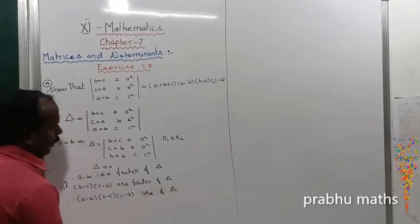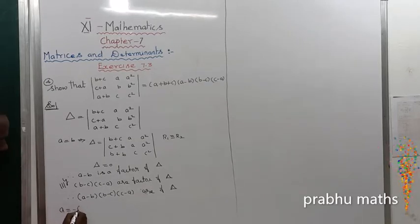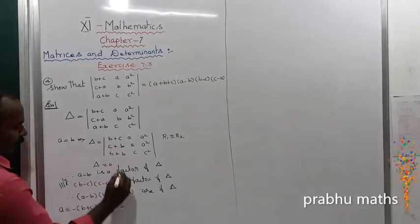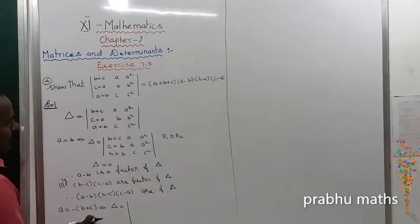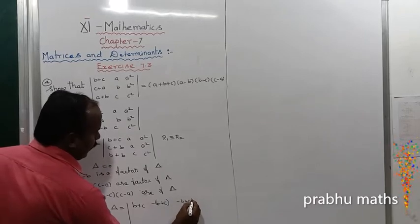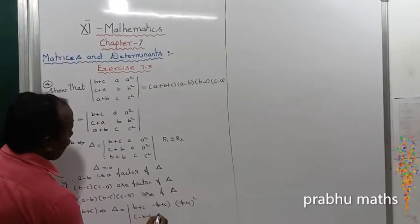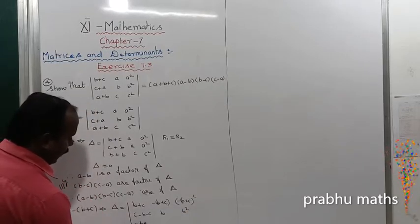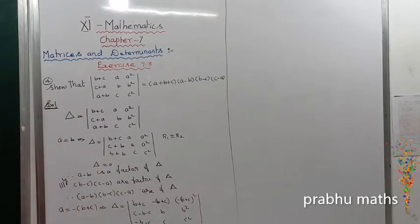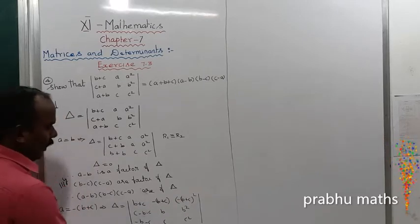The other factor: suppose a+b+c equals 0, so a equals -(b+c). Replacing a with -(b+c), the first row becomes: b+c, -(b+c), (b+c)². The first row entries all share the factor (b+c), and the determinant becomes 0 because the first row values cancel to give identical structure.